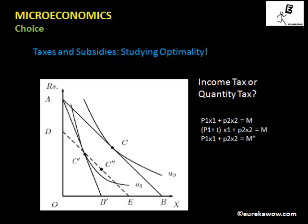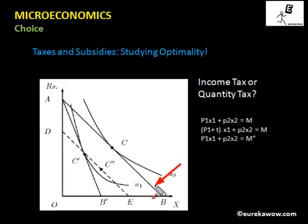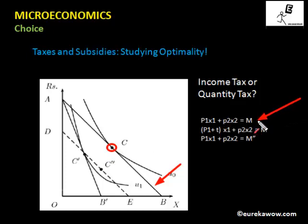First we will take a budget constraint. This is the initial budget constraint, and this is the point of optimality of the consumer. The initial budget constraint is P1·X1 + P2·X2 = M.